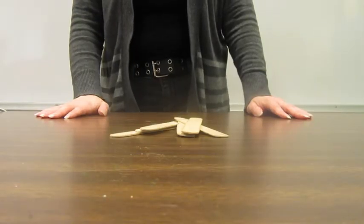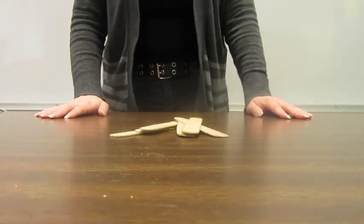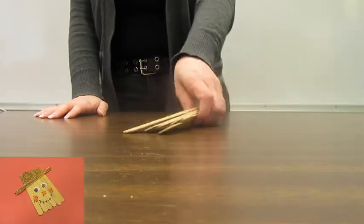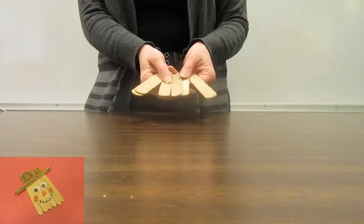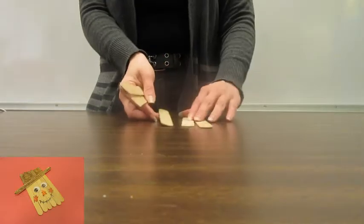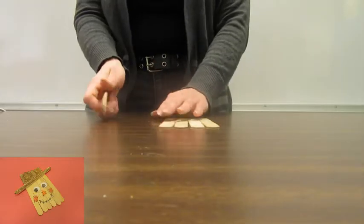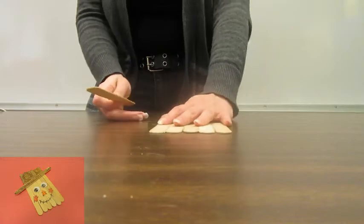All right, for our next craft, we are going to make a face. You're going to need just a bunch of sticks, any size. You can use big ones, small ones. It doesn't really matter. Up to you. I'm going to use jumbo once again. I've got one, two, three, four, five. I'm going to line up for my base.